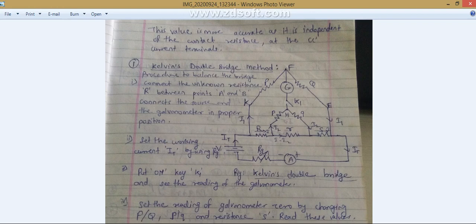In this Kelvin double bridge method, you are adding one of the ratio arms, that is p upon q small. So one arm is added, which is why it is called double bridge. Here, the sliding wire resistance and others are known resistances except R.